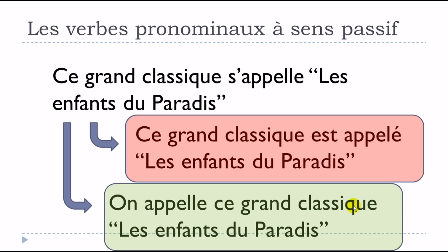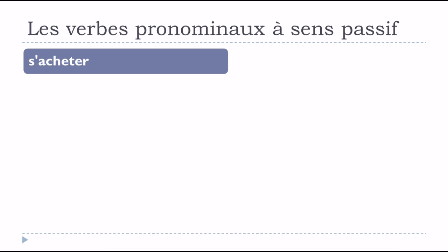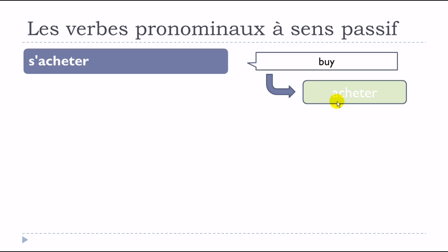You can also say 'On appelle ce grand classique Les Enfants du Paradis.' The useful thing is that in this situation, you can use the pronominal form 's'appeler' instead of the passive form 'est appelé'. So using the verbe pronominal à sens passif can be a practical alternative to the passive construction — quite useful to remember as an option in certain cases.